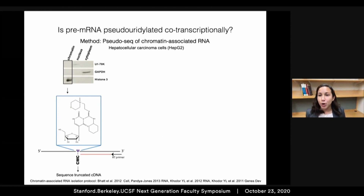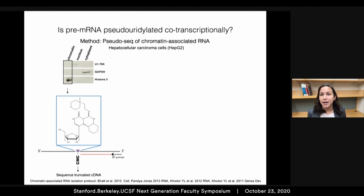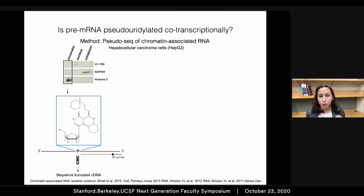To first ask whether pre-mRNA was pseudouridinated co-transcriptionally, I chose the hepatocellular carcinoma cell line HEPT2, because high expression of the pseudouridine synthase is correlated with poor prognosis in this disease. I then biochemically fractionated cells and isolated chromatin to enrich for pre-messenger RNA, which is still tethered to the chromatin during transcription. I then did pseudouridine profiling to identify the locations of these pseudouridines across the nascent transcriptome.